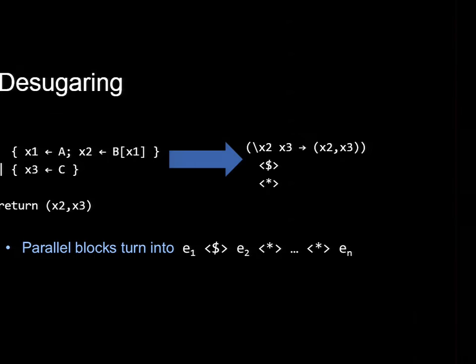So then we get to desugaring. Desugaring takes the parallel blocks, turns a parallel block into an applicative, as you might expect. And here's where the return comes back. The return goes in the left-hand side of the applicative. Finally, we recursively desugar things. And we have a semicolon that turns into bind. That's it. You can find the details of this in the paper.